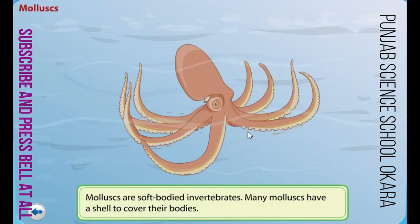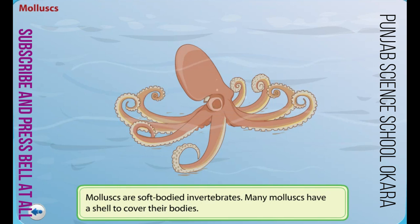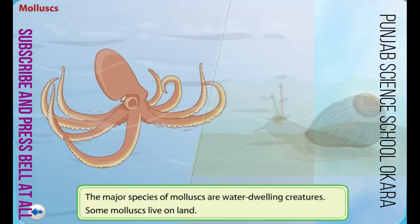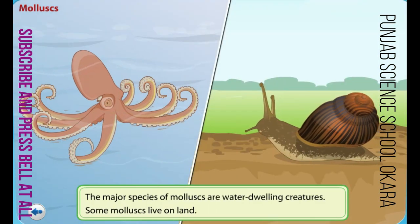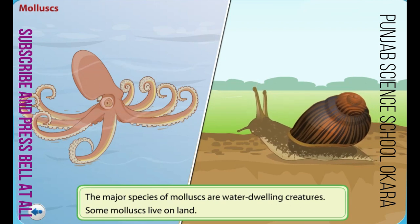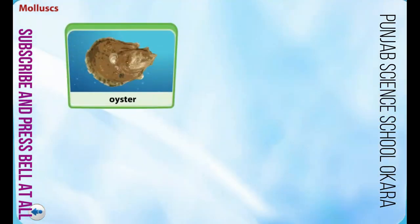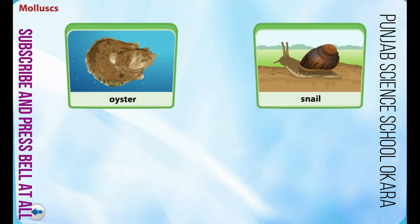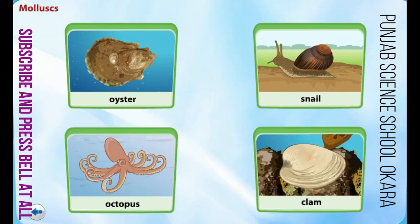Molluscs are soft-bodied invertebrates. Many molluscs have a shell to cover their bodies. The major species of molluscs are water-dwelling creatures; however, some are found on land too. Oysters, snails, octopuses, and clams are examples of molluscs.